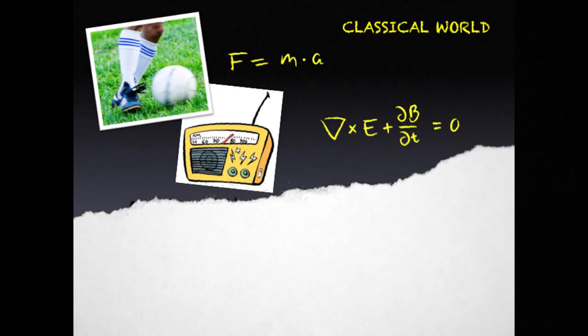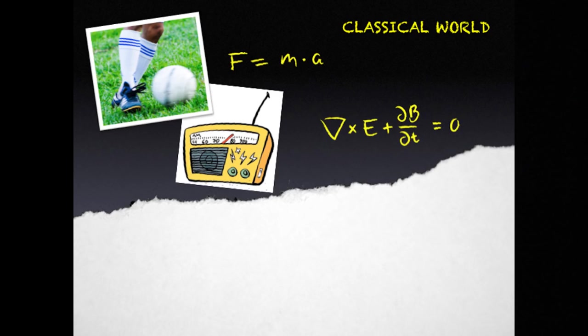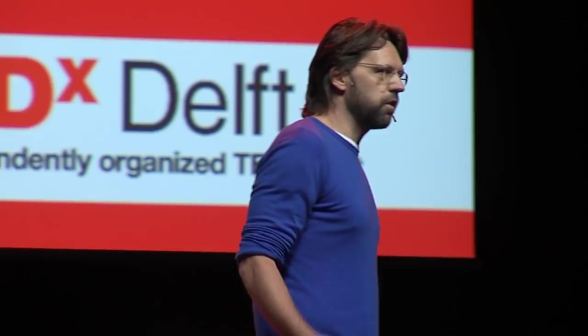I only want to show you these formulas to illustrate that with just a few symbols, like F equals m times a, we can describe a wealth of phenomena — from the earth around the sun, from a ball game, from your bike ride, everything.